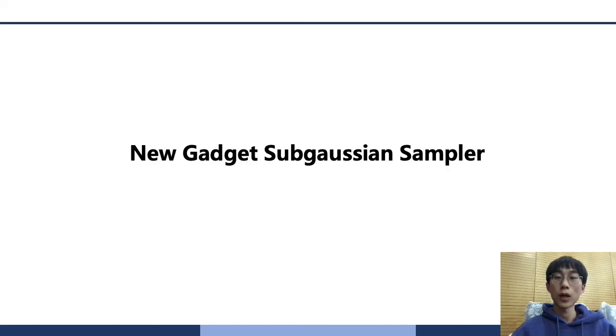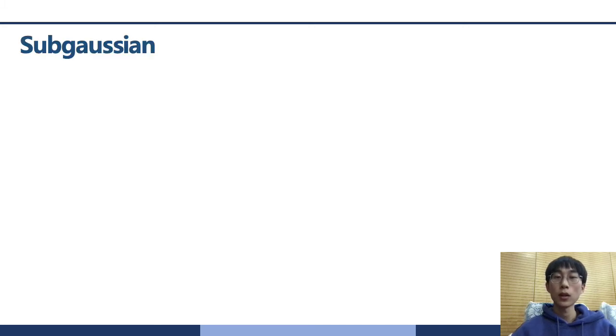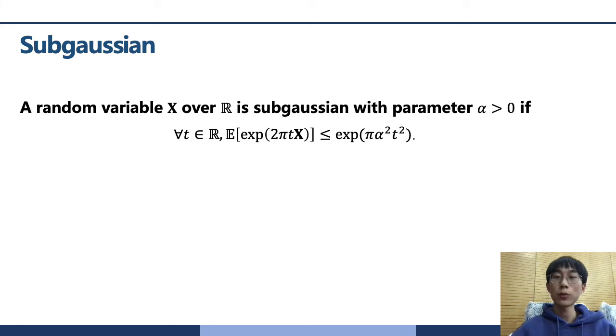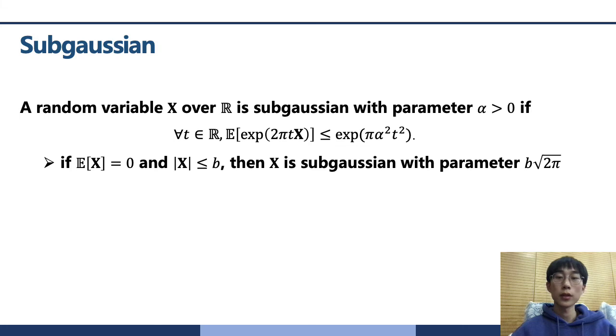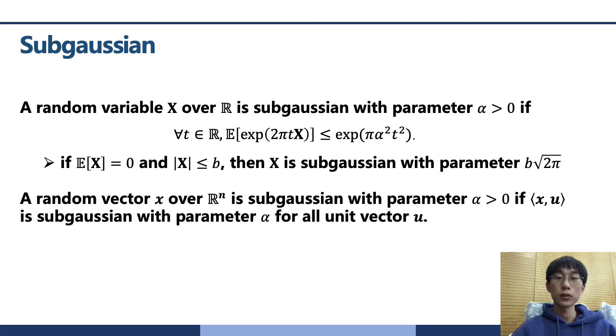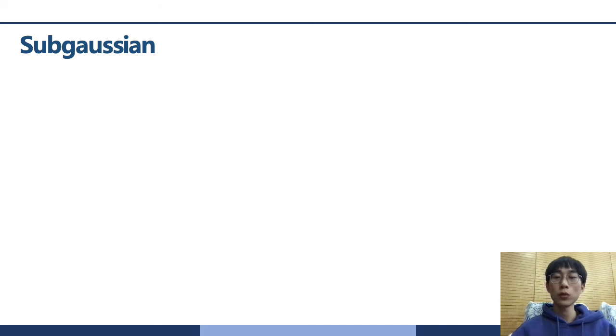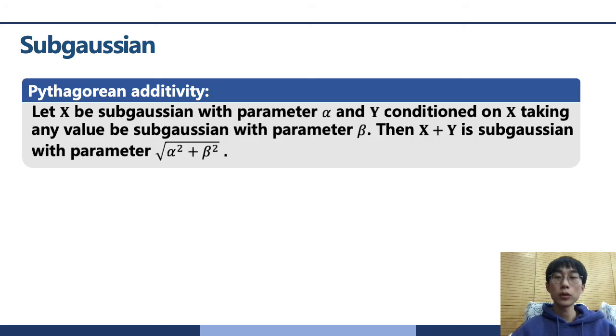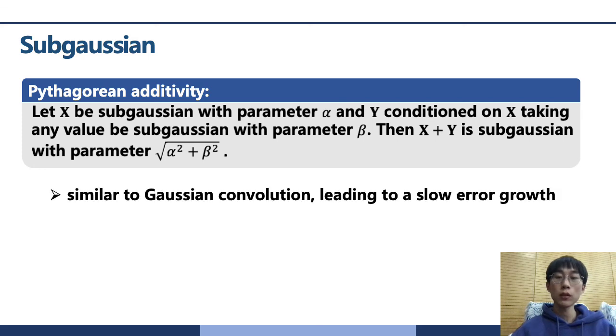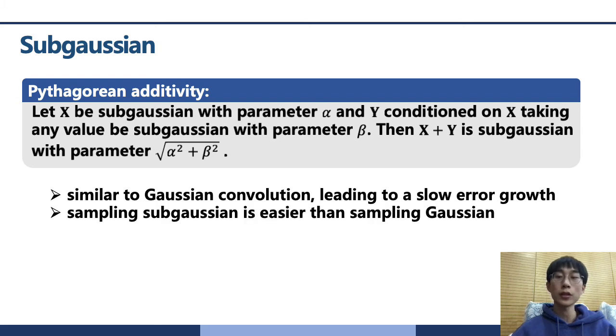Next, we introduce our gadget sub-Gaussian sampler. As one would expect, a random variable X over R is sub-Gaussian with parameter alpha if its tail is bounded by the Gaussian of the width alpha. This is an example of sub-Gaussian. We also use sub-Gaussian vectors. This is the definition of it. Sub-Gaussian is a relaxed version of a Gaussian. An important property of sub-Gaussian is Pythagorean additivity. This is similar to a Gaussian convolution, leading to a slow error growth. While sampling sub-Gaussian is easier than sampling Gaussian.